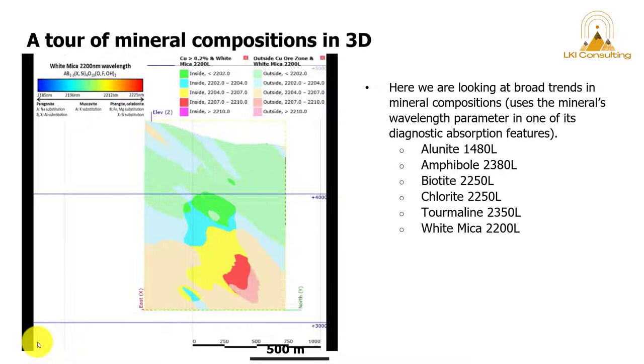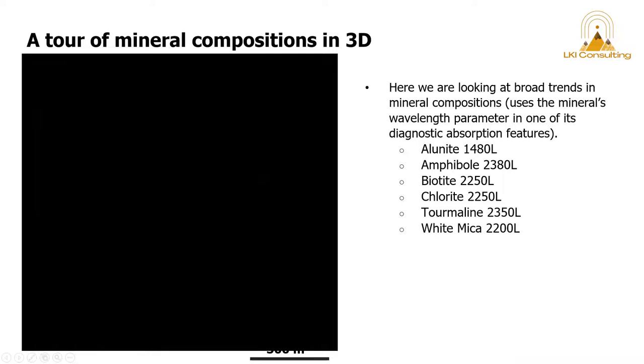And here's the white mica, the commonly thought of 2200 nanometer wavelength feature. And this is a combined model with the copper grade shell. So something to think about here is are we too close to determine the efficacy of these features as pathfinders? Is this going to be helpful towards pinpointing different generations of copper gold?